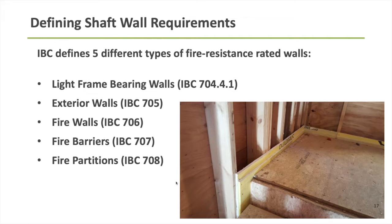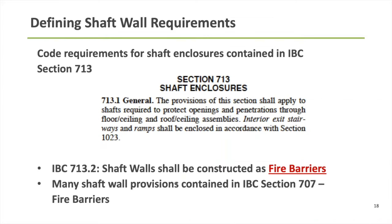Shaft walls are constructed as fire barriers. Because of that, as we go through these code sections, we'll bounce back and forth between Section 713, which is the general shaft enclosure section, and Section 707, which is the fire barrier section of the building code.